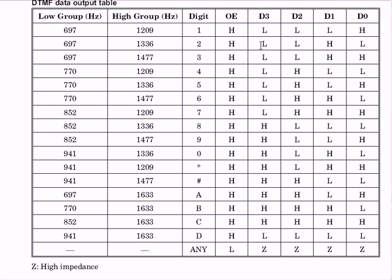For digit 2, the binary output is 0, 0, 1, 0. For digit 3, it is 0, 0, 1, 1. We will see the same thing in the simulation.